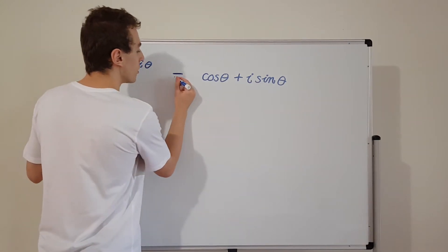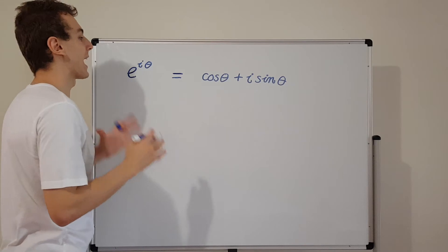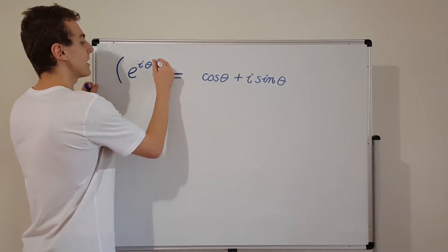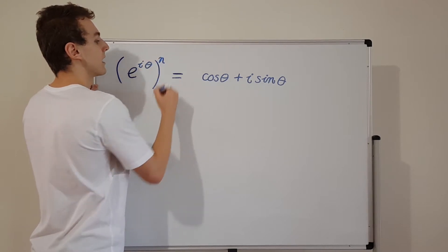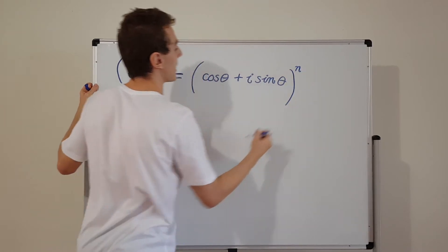What I'm going to do to Euler's formula is I'm actually going to raise both sides to the power of n. So n is just going to be some exponent. We're going to take this side, raise it to the power of n, and we're also going to do that to this side.